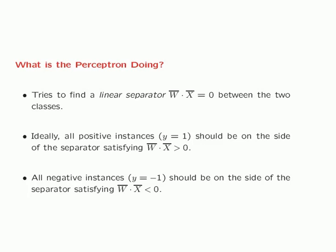What the perceptron really does is that it tries to find a linear separator between the two classes. Ideally, you want to learn a weight vector w such that all positive instances — all instances satisfying y equals one — are on the side of the separator satisfying the dot product of w and x is greater than zero. When you take the sign of that, you get the correct prediction of plus one. This is a classical linear model where you're trying to find a hyperplane separating the two classes.